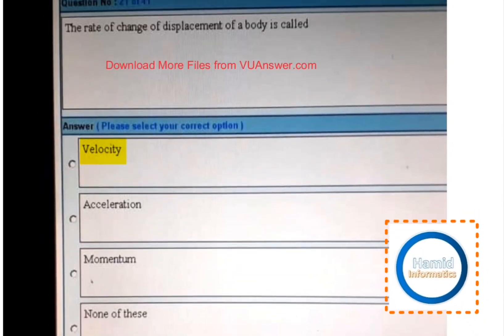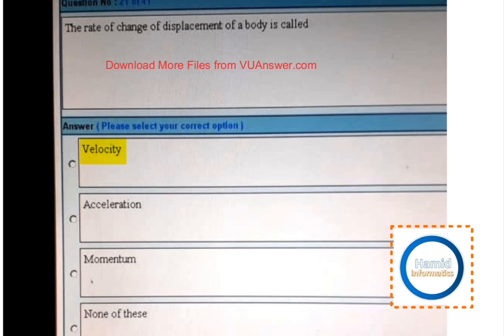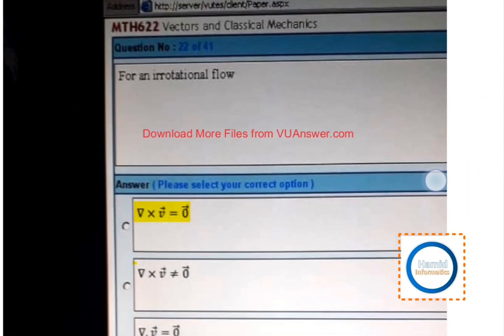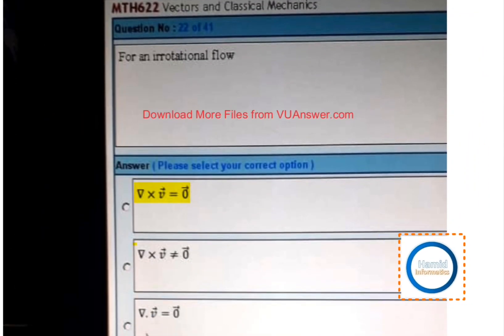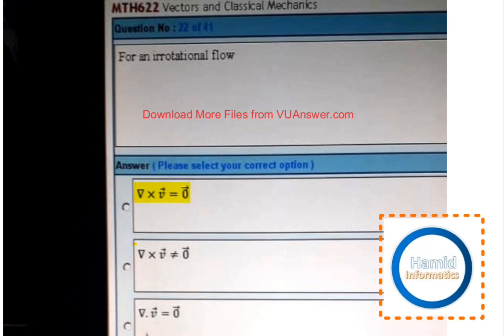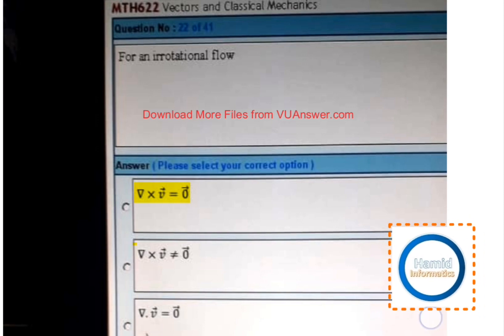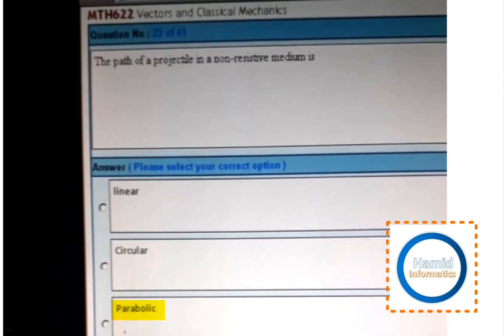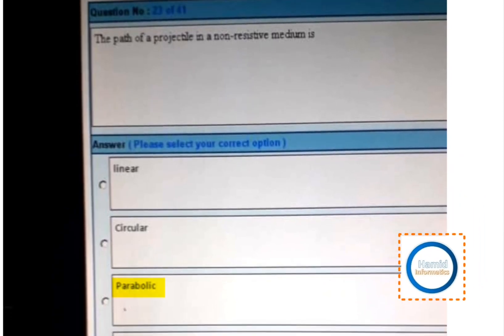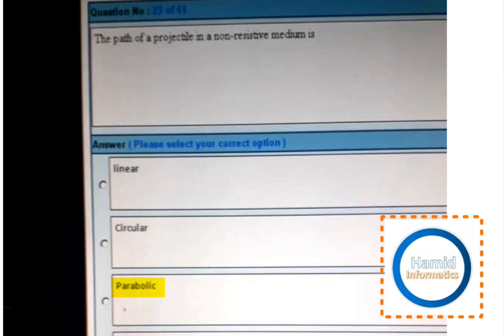The rate of change of displacement of a body is called velocity. Velocity for an irrotational flow: del into v vector equal to zero vector. Next, the path of a projectile in a non-resistive medium is parabolic.